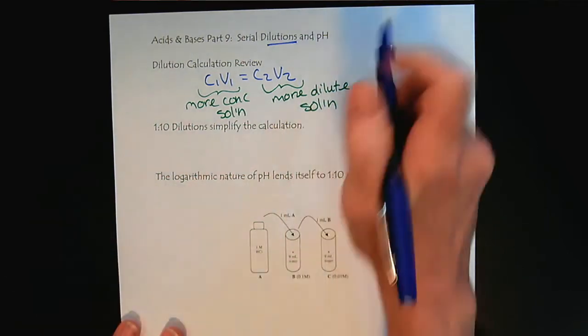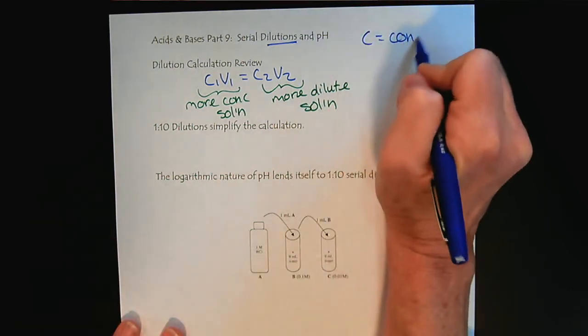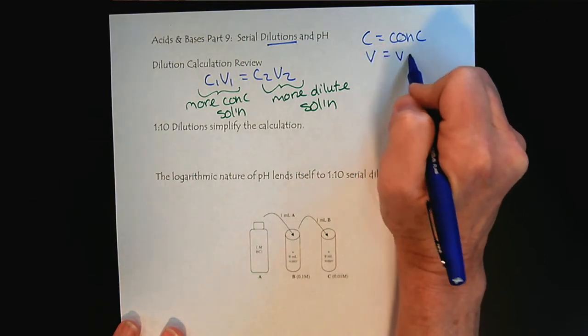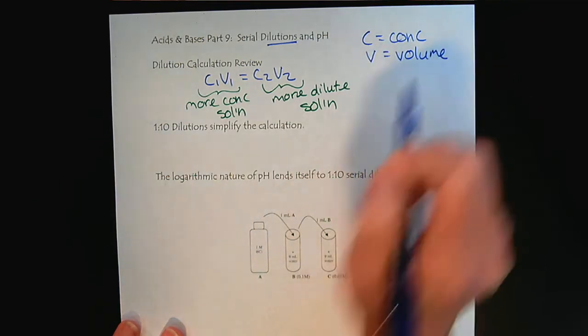The C's represent concentration and the V's represent volume. There is a video tutorial on dilutions and solutions earlier in the series if you need a refresher.